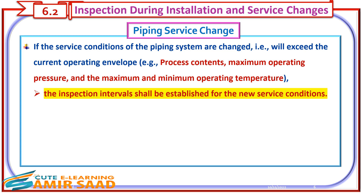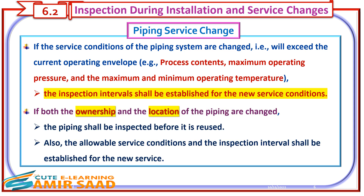Baseline data also facilitates the creation of an accurate corrosion rate calculation after the first in-service thickness measurements are recorded. Piping service change: If the service conditions of the piping system are changed — that is, will exceed the current operating envelope — for example process contents, maximum operating pressure, and the maximum and minimum operating temperature — the inspection intervals shall be established for the new service conditions. If both the ownership and the location of the piping are changed, the piping shall be inspected before it is reused. Also, the allowable service conditions and the inspection interval shall be established for the new service.